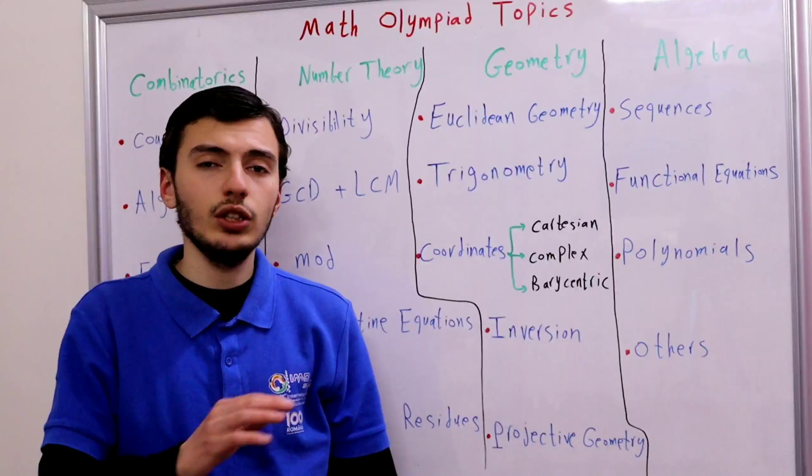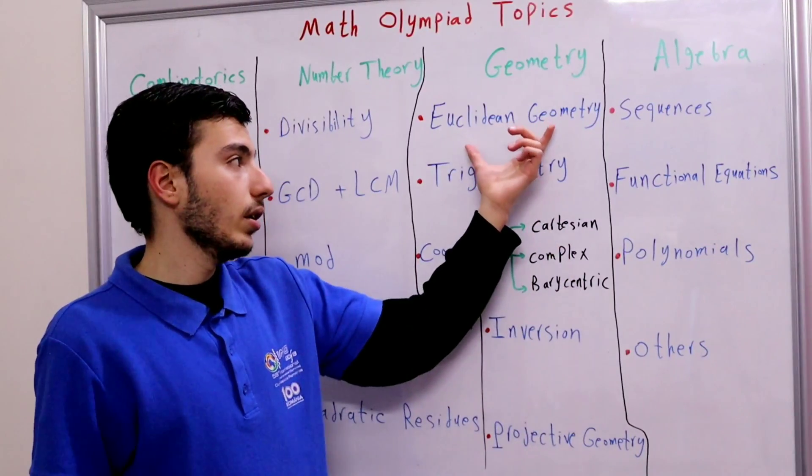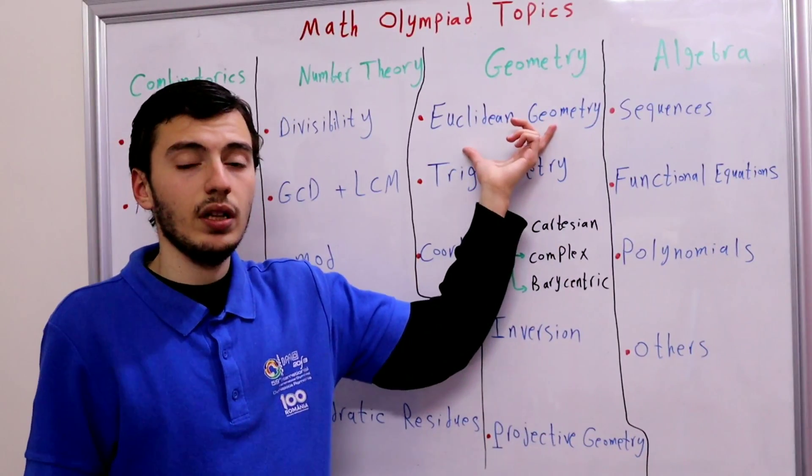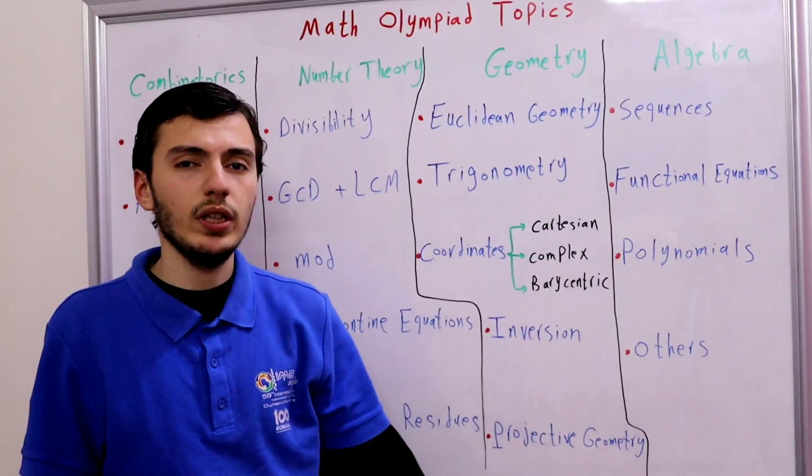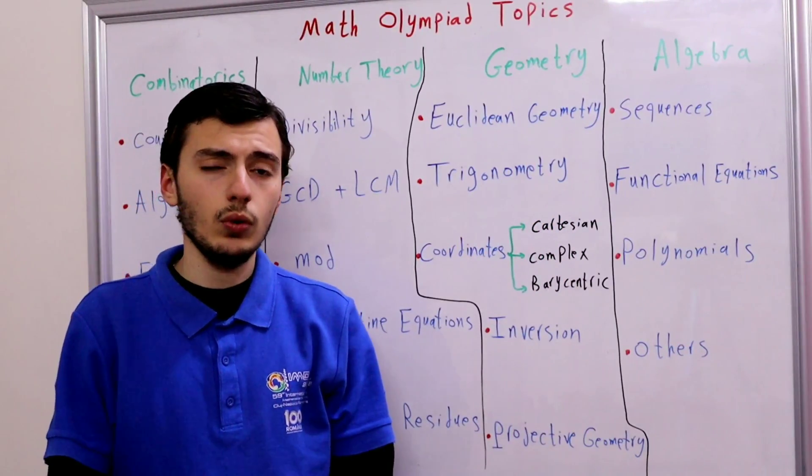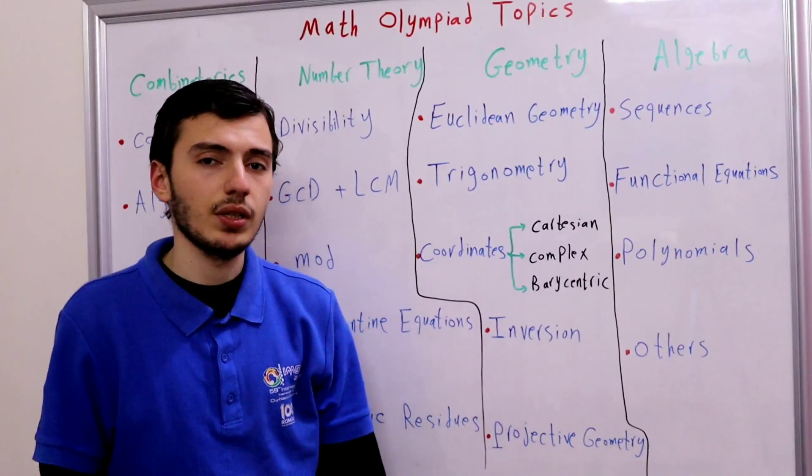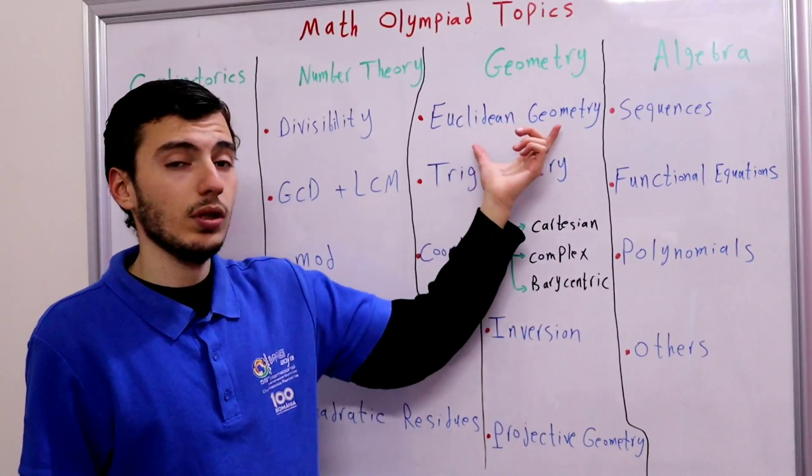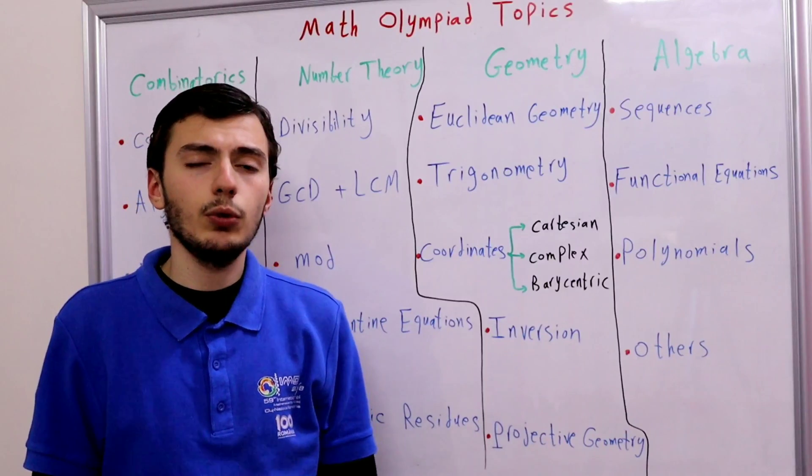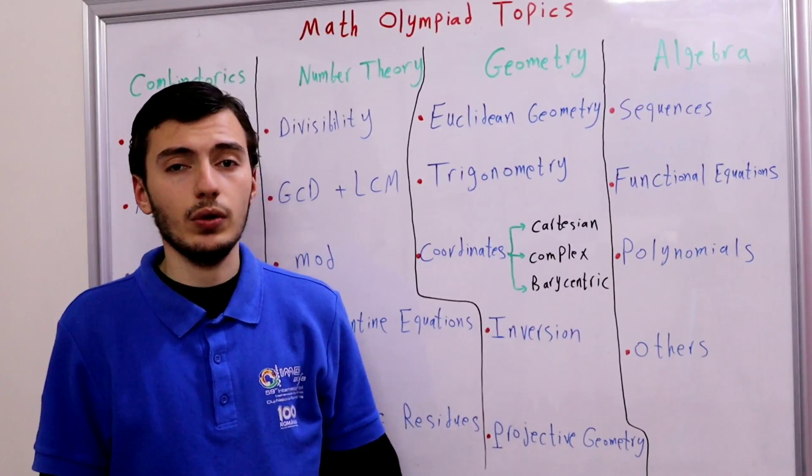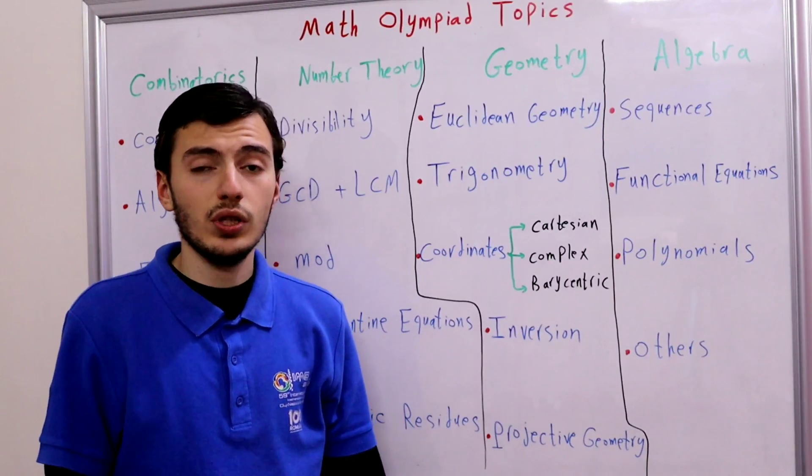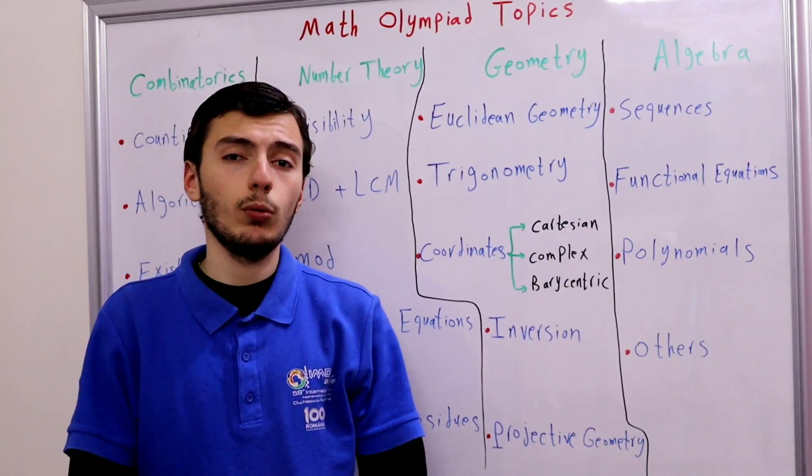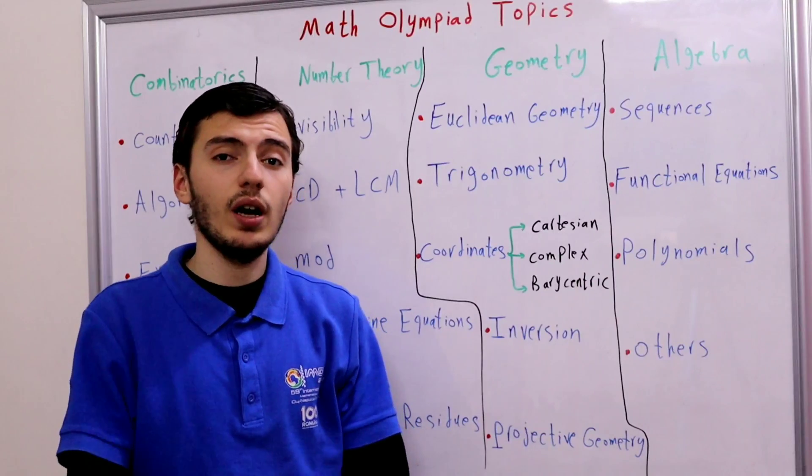Actually if you're 100% strong at Euclidean geometry then you don't need any of these other tools. But trust me it is really difficult. You want to know why? Well the problem is when you solve a problem using Euclidean geometry only, you probably will need to construct or to define some new points or to draw some new circles that are not even in your problem statement. Can you imagine how hard is that?